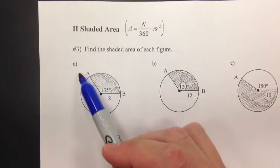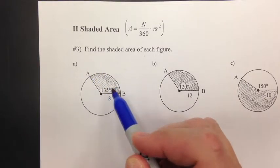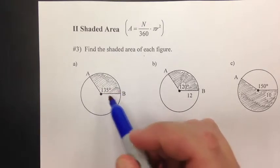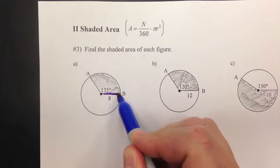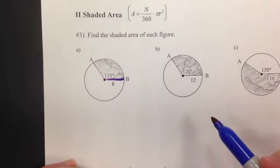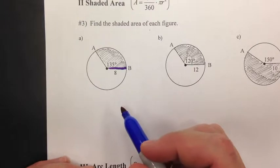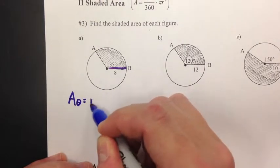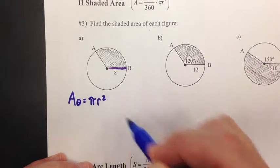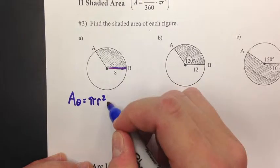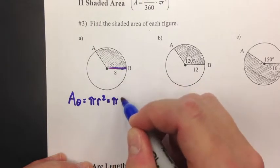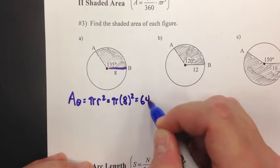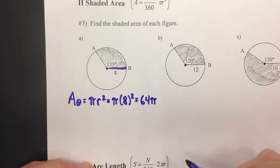Let's look at part a. Here's the picture — the central angle is 135 degrees and the radius is 8. We can find the total area of the circle: area of a circle is pi times radius squared, pi r squared. The radius is 8, so pi times 8 squared, which is 64 pi.